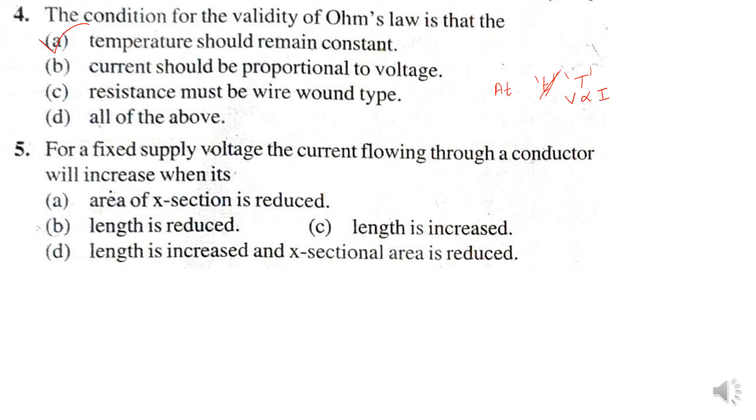Next question. For a fixed supply voltage, the current flowing through a conductor will increase when its... Supply voltage is fixed, so what about I? I is equal to V divided by R. V is fixed, that is constant. So R is equal to rho into L by A. From this equation, I is inversely proportional to L. So I is increased when L is decreased. So when its length is reduced.